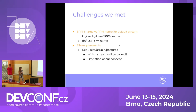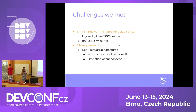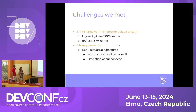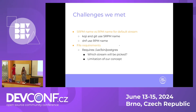Then there is the file requirement issue. DNF cannot really determine which version of a package you want installed if you require only a specific file path in the spec file. For example, if you want to install postgres via /usr/bin/postgres, it is undefined which version gets installed. This is discouraged in Fedora guidelines, and there are more tricks connected to resolving files. If you stick to Fedora guidelines, you should be okay.